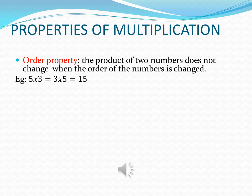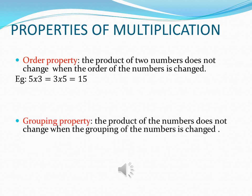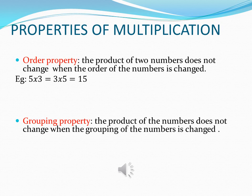Property number 2, grouping property. It states that the product of the numbers does not change when the grouping of the numbers is changed. For example, 3 into in bracket 2 multiplied by 4 will be same as in bracket 3 multiplied by 2 multiplied by 4, which will be equal to 24.